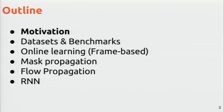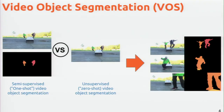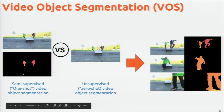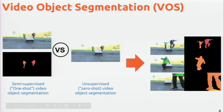First, I'd like to define the task we are tackling here. There are going to be two tasks. The goal is given a video sequence — this represents the first frame — and given a mask of the objects you want to track, like these two skaters and the skate down here, the goal is to segment them in each frame. We call this semi-supervised or one-shot video object segmentation, where we provide the mask for the first frame of the object you want to follow.